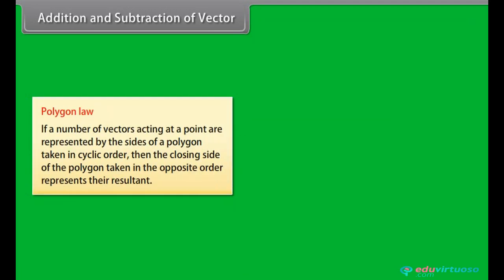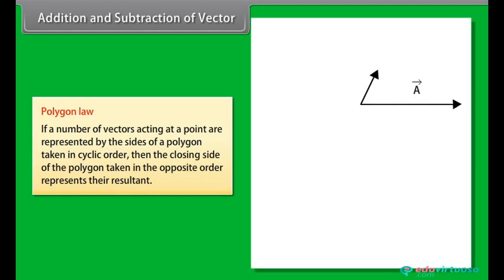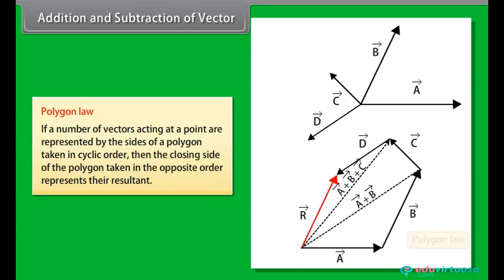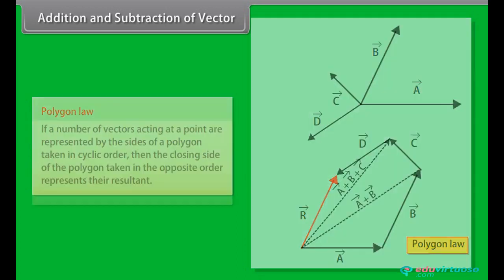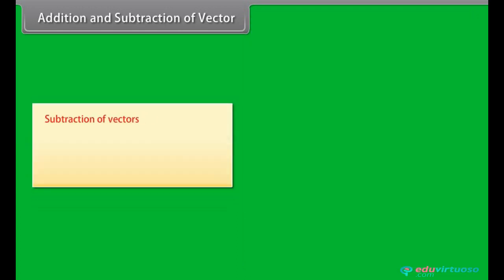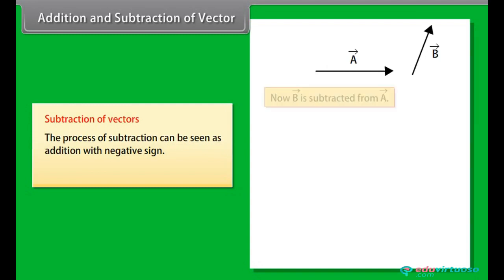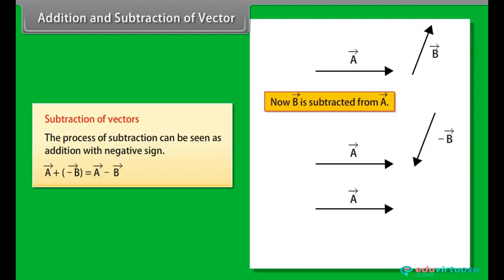C. Polygon law: If a number of vectors acting at a point are represented by the sides of a polygon taken in cyclic order, then the closing side of the polygon taken in the opposite order represents their resultant. Subtraction of vectors: The process of subtraction can be seen as addition with negative sign.